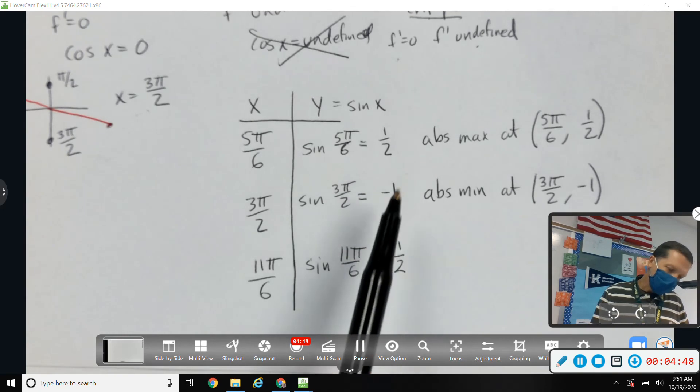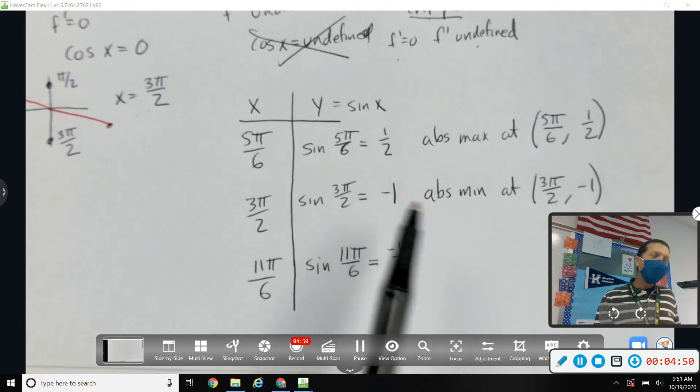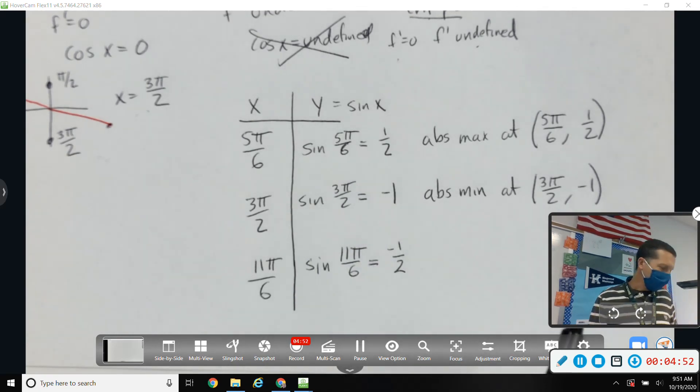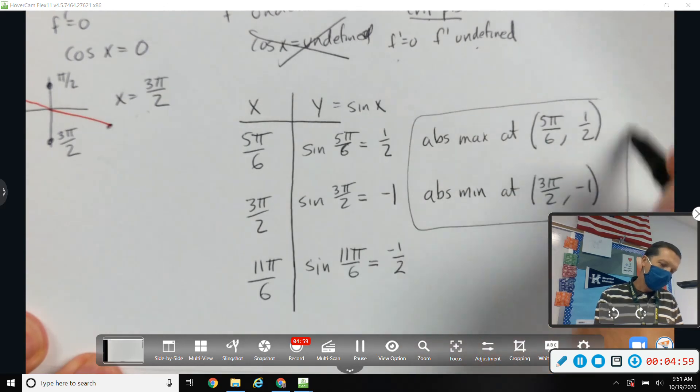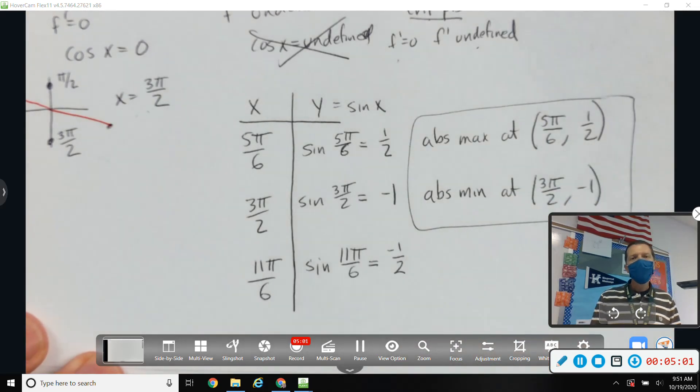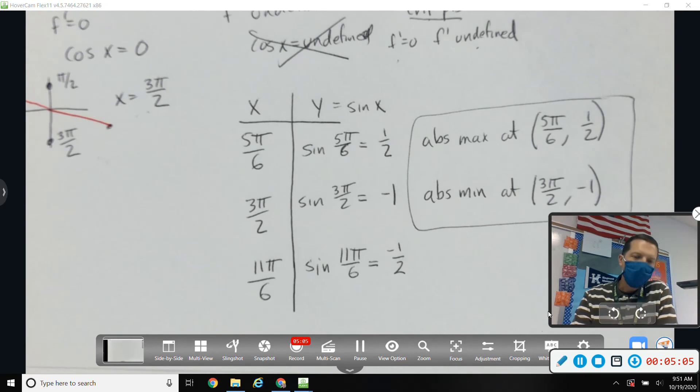The biggest value and the smallest value. I'm going to recheck the directions to make sure I answered exactly what they're looking for. Find the absolute extrema of the function on the closed interval. So this is the end of the problem. Again, that was number 33 on page 167.